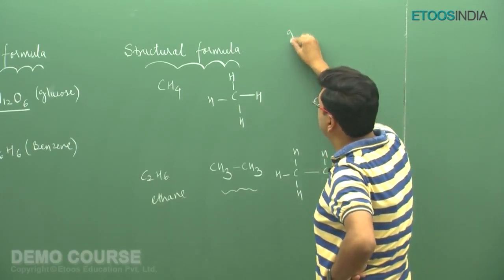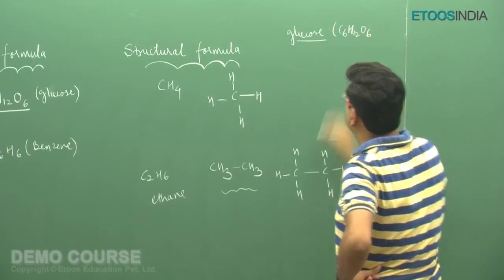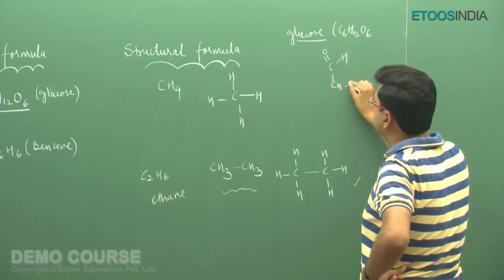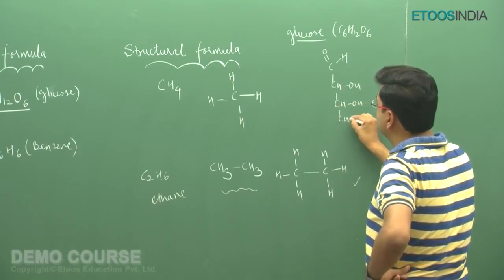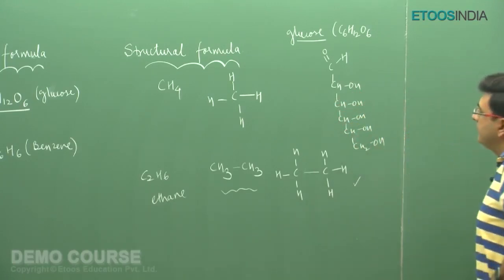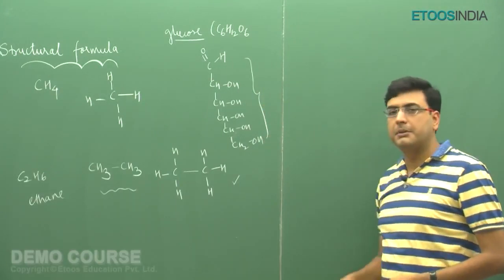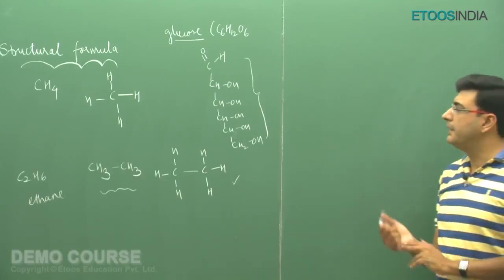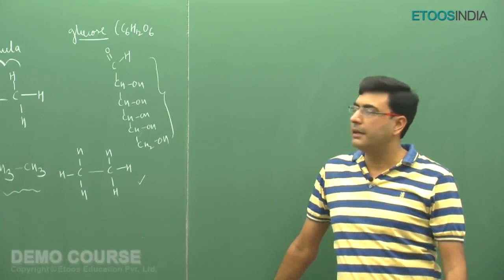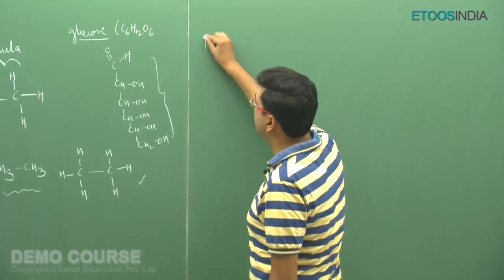For glucose, the molecular formula is C6H12O6, but the structural formula representing connectivity between atoms is more elaborate. This precise representation becomes inconvenient when all molecules must be drawn using actual element symbols. So it becomes very convenient to represent molecules using a much more compact notation, known as bond line notation.